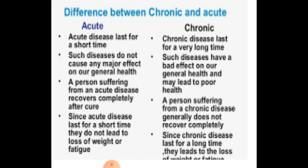A person suffering from an acute disease recovers completely after cure. Once the medicine is taken, the person is completely cured and all right, and they return to their normal routine work. But a person suffering from chronic disease does not recover completely — something in the body remains missing, some problem persists, resistance power decreases, and they cannot work with the same energy as before.